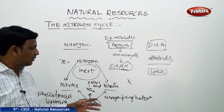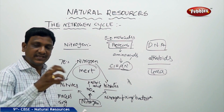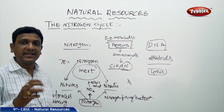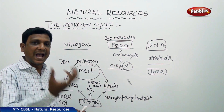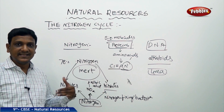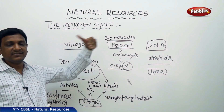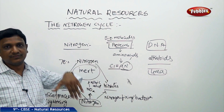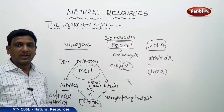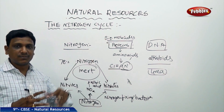So when the atmospheric nitrogen is converted to nitrites and nitrates, these compounds are easily taken up by the plants. Plants make amino acids and proteins. By eating the plants and plant products, animals get the proteins into their bodies. This is the way how the atmospheric nitrogen reaches the body of animals and plants.